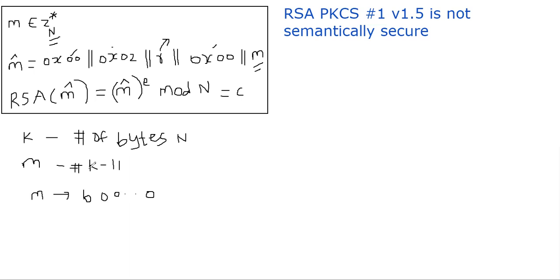So remember, m has k minus 11 bytes. That means in terms of bits, it is nothing but 8 times k minus 11 bits. And I mentioned that the first bit, the bit b, we don't know what it is. It could be either 0 or 1. And I'm going to tell you how an attacker can find this bit value.